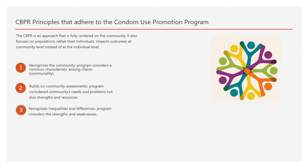The community-based participatory research principles that adhere to the condom use promotion program are just a few. Briefly, CBPR is an approach that is fully centered on the community. It focuses on populations rather than individuals, so the entry point is the population and the outcome or goal of the program is population-oriented rather than at the individual level.